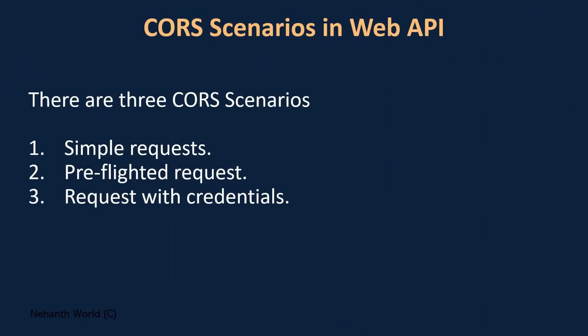This resource sharing can be done in three different scenarios. The first one is the simple request, the second one is the preflight request, and the third one is the request with credentials. These are the three different CORS scenarios, which we will discuss in the next videos.